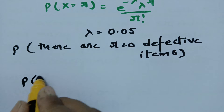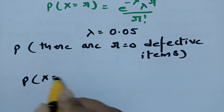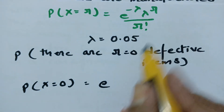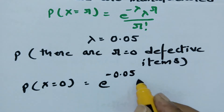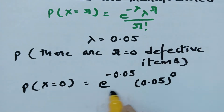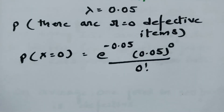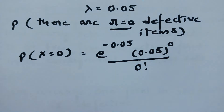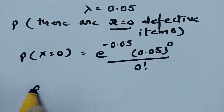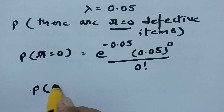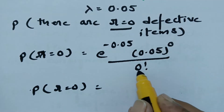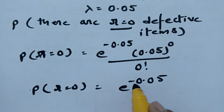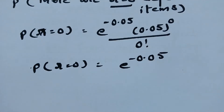If R is equal to 0, the formula becomes E power minus lambda, times lambda power 0, divided by 0 factorial. Lambda is 0.05, so this is E power minus 0.05, times 0.05 power 0, divided by 0 factorial. Anything to the power of 0 is 1, and 0 factorial is also 1. So the probability simplifies to E power minus 0.05.